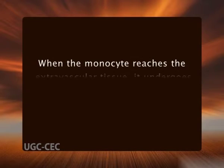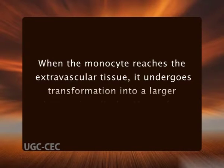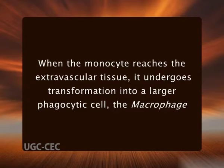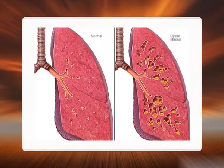When the monocyte reaches the extravascular tissue, it undergoes transformation into a larger phagocytic cell — the macrophage. Activated macrophages create a wide variety of biologically active products that, if unchecked, result in the tissue injury and fibrosis characteristic of chronic inflammation. In short-lived inflammation, if the irritant is eliminated, macrophages eventually disappear. In chronic inflammation, macrophage accumulation persists and is mediated by different mechanisms.